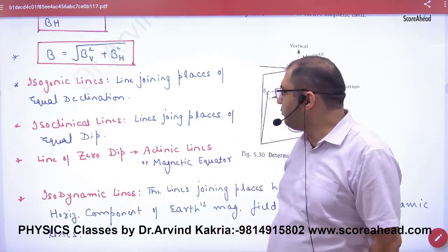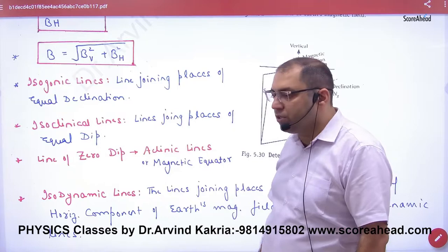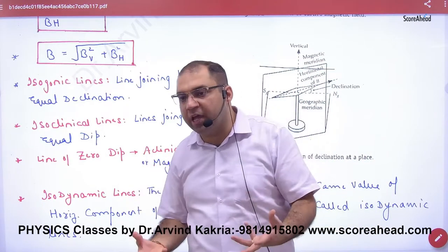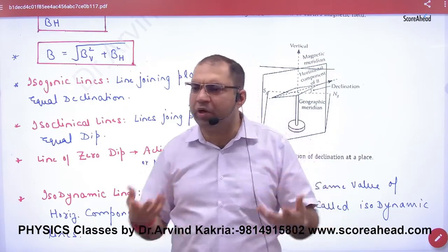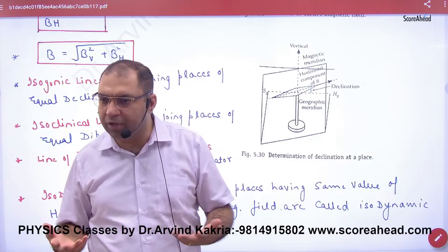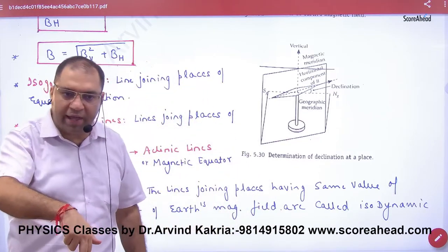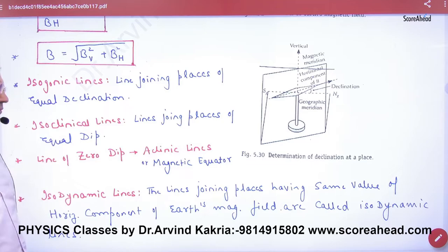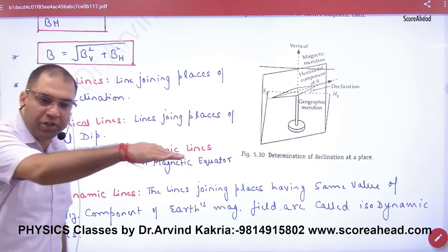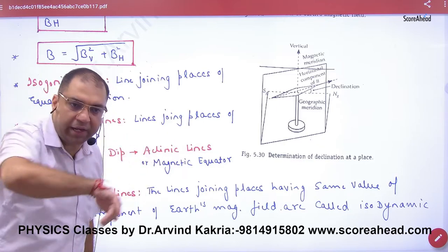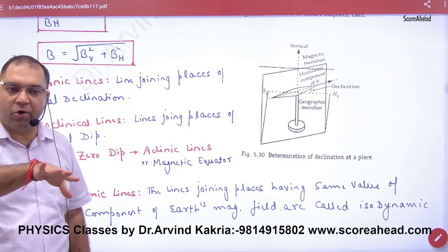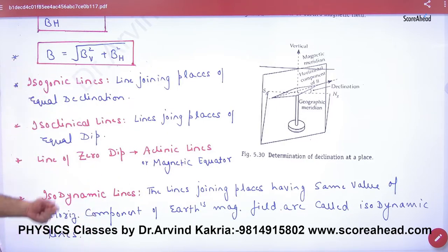The lines joining locations where the angle of dip is the same are called isoclinic lines. On the equator, the angle of dip is always zero, and that line is called the line of zero dip.